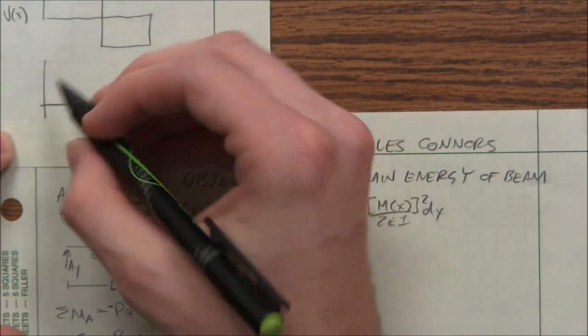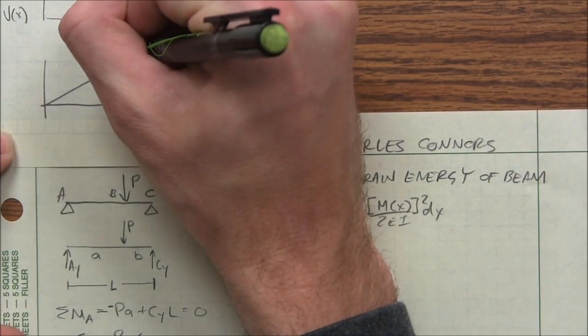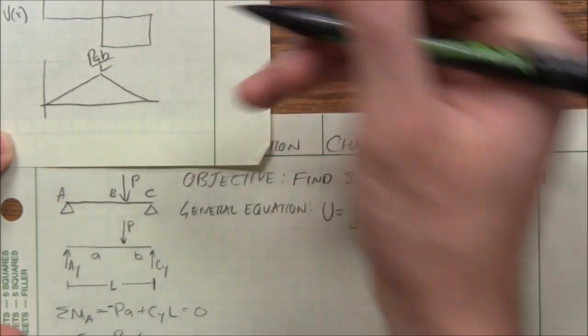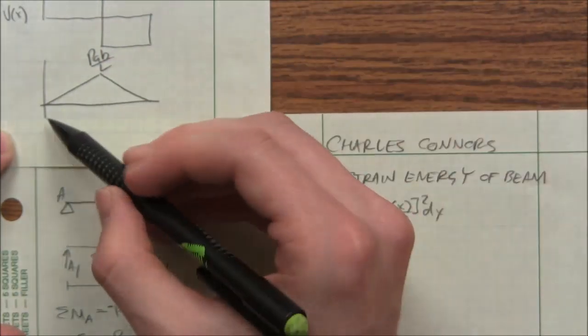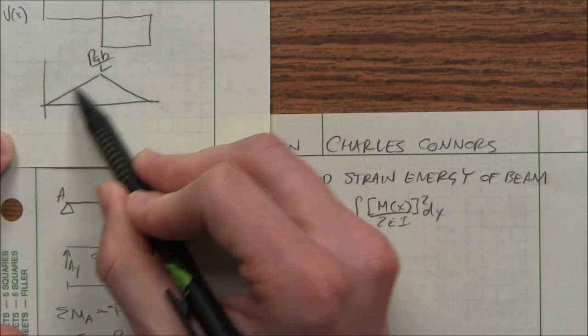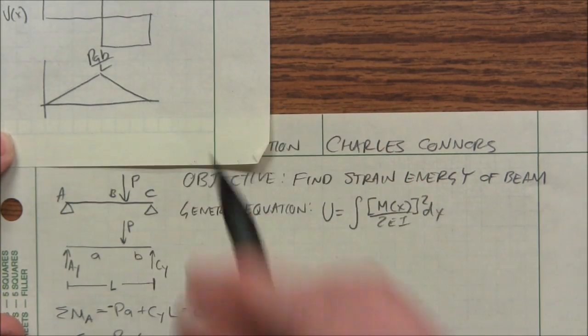And it's going to be even more evident when we look at our moment diagram. So it starts at zero because it's a pin. It goes up to PAB over L, and it goes back down to zero since it's pinned on that side as well. So you can tell that this and these two different moment lines have to be drawn with two different equations. So that's what I'm going to be deriving next.